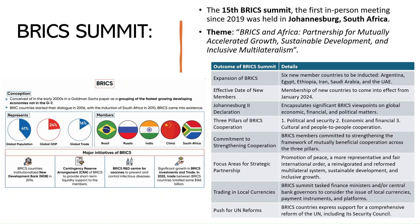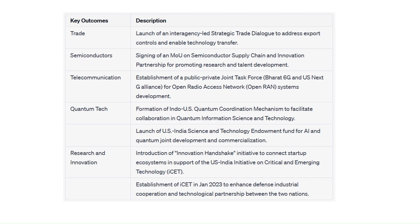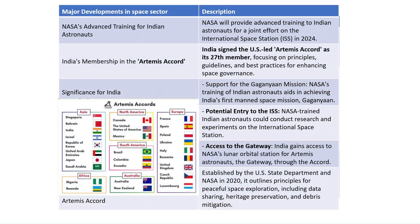India signed the US-led Artemis Accord as its 27th member. NASA will provide advanced training to Indian astronauts for a joint effort on the International Space Station in 2024. The Artemis Accord is a moon exploration program focused on manned moon missions, and India has now joined as the 27th member.